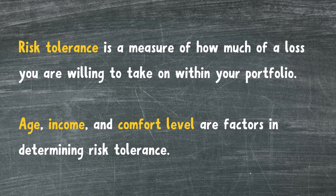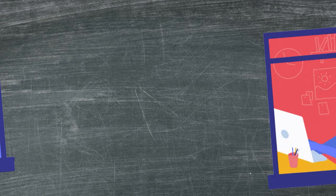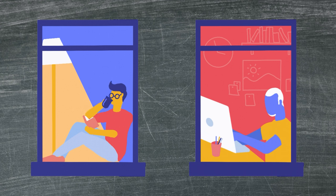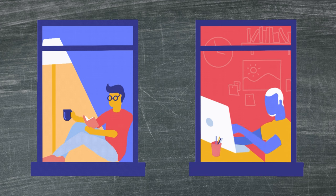Risk tolerance is the measure of how much of a loss you are willing to take on within your portfolio. A person's age, income, and comfort level all play into determining their risk tolerance. For example, a person in their 20s might have a higher risk tolerance than a person in their 50s when building a retirement portfolio, since the younger individual has more time to recoup possible investment losses before reaching their goal of retirement.